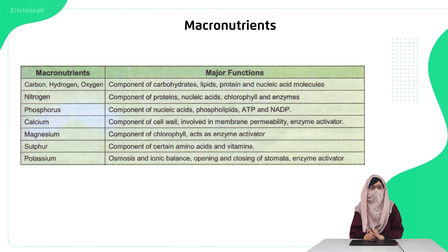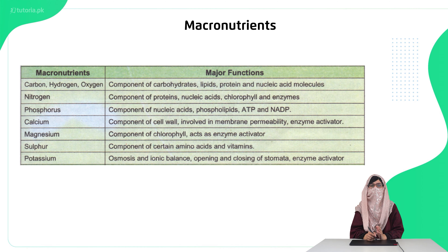Sulfur plays an important role — you will remember that amino acids contain sulfide bonding, which involves sulfur, and your vitamins are also created using sulfur. Then potassium is involved in osmosis and ionic balance, and most importantly in the opening and closing of stomata through influx and deflux.